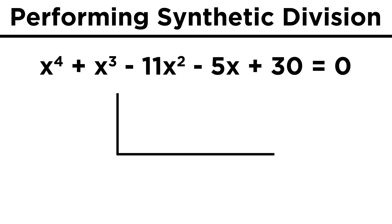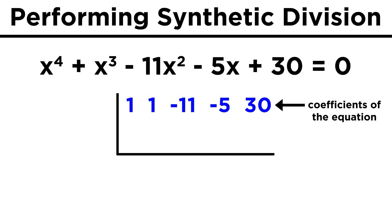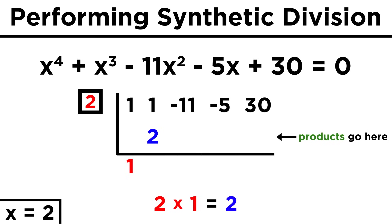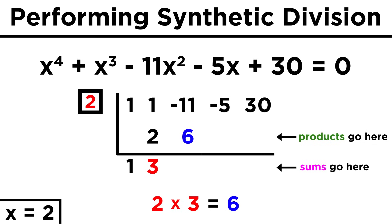The way we will test this is as follows. Let's make two lines at a right angle like this, and in this top row we will list only the coefficients of our equation. Then we want to test to see if two is one of the solutions, so let's put a two to the left over here. Now we take the first coefficient — in this case a one — and drop it down here. Now we multiply by the two and put that here. Now we can add these together to get three, and write that here.